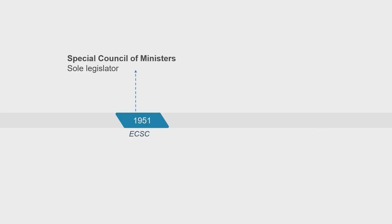The Council of the EU itself has remained relatively unchanged over the course of EU history. The European Coal and Steel Community included a so-called Special Council of Ministers, which was the predecessor of the Council of the European Union as we know it today. Its role and voting rules, however, have evolved over the course of EU history. Until the Maastricht Treaty, the Council was the sole legislator.